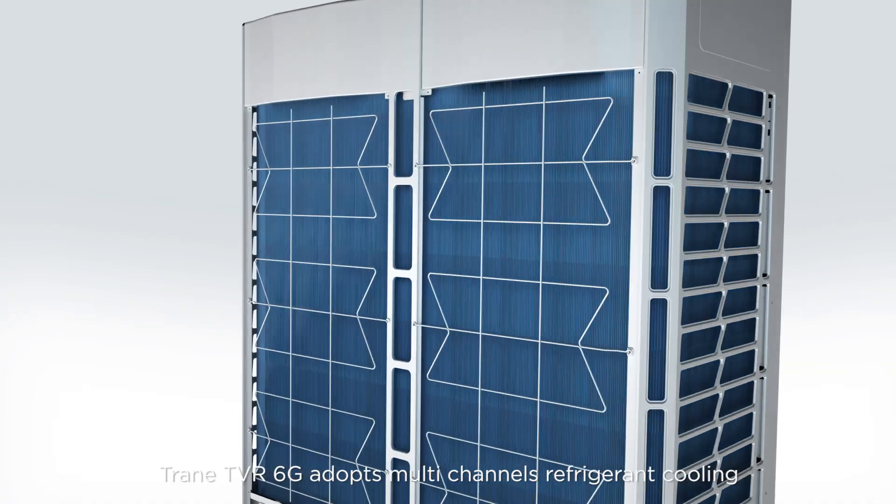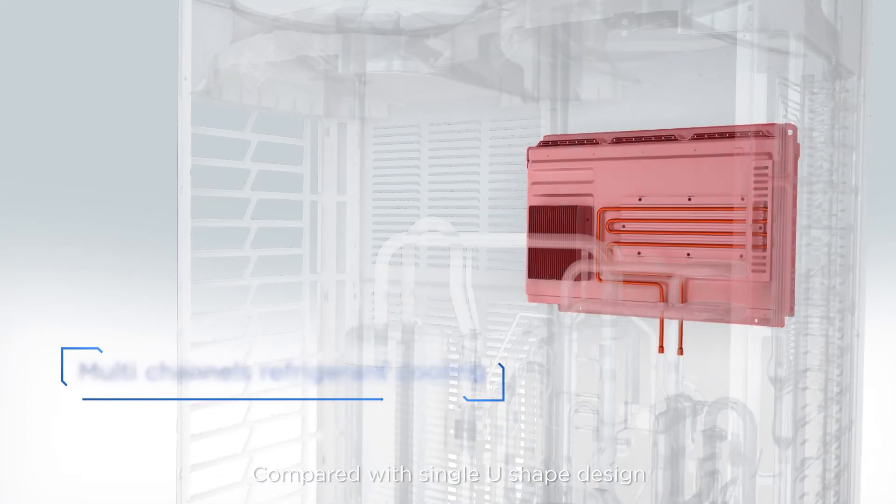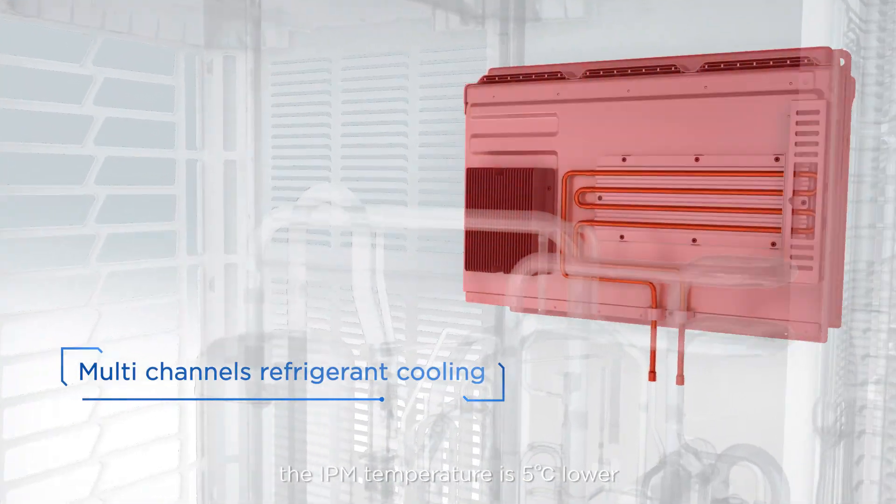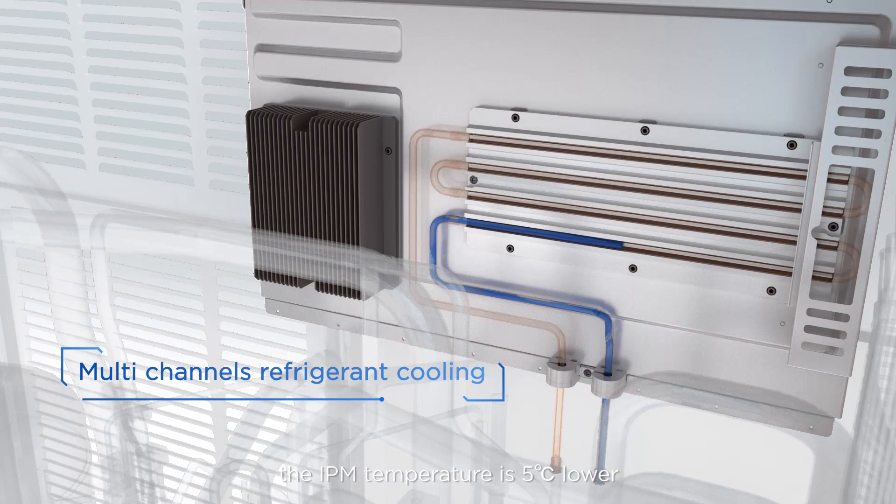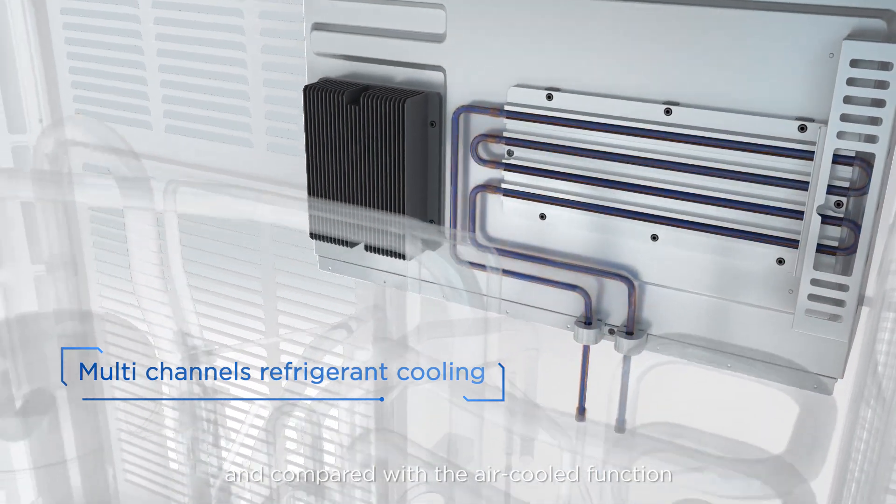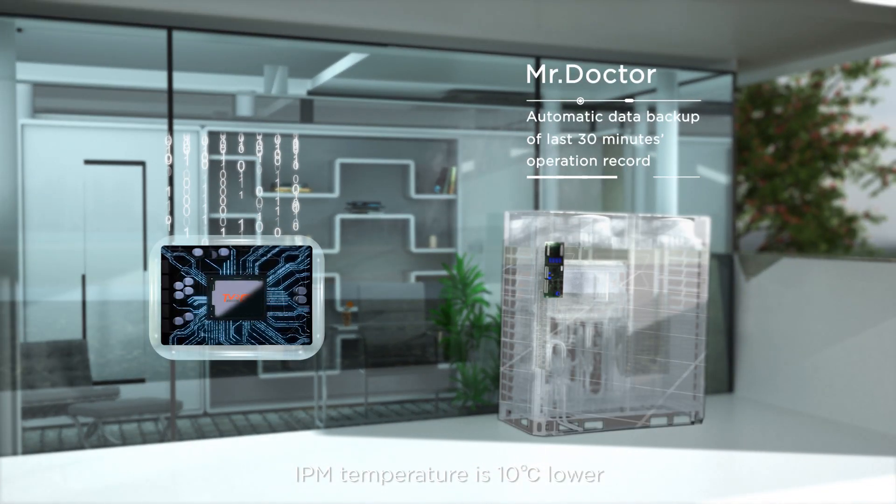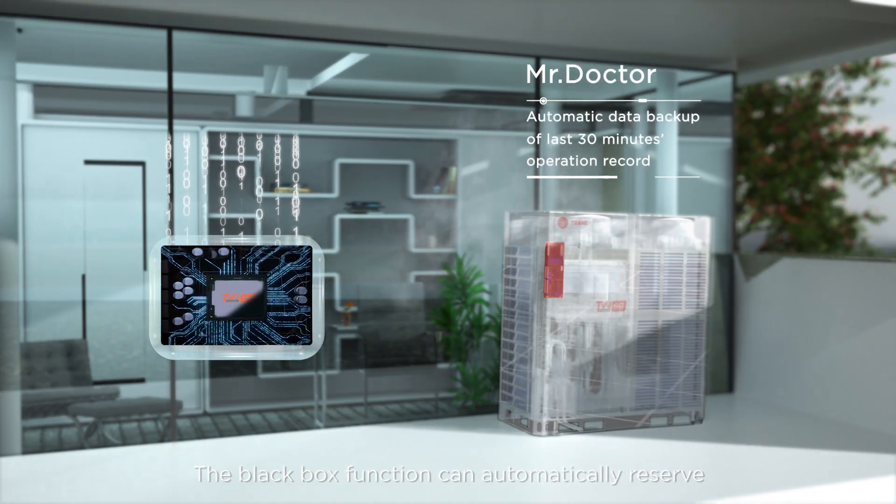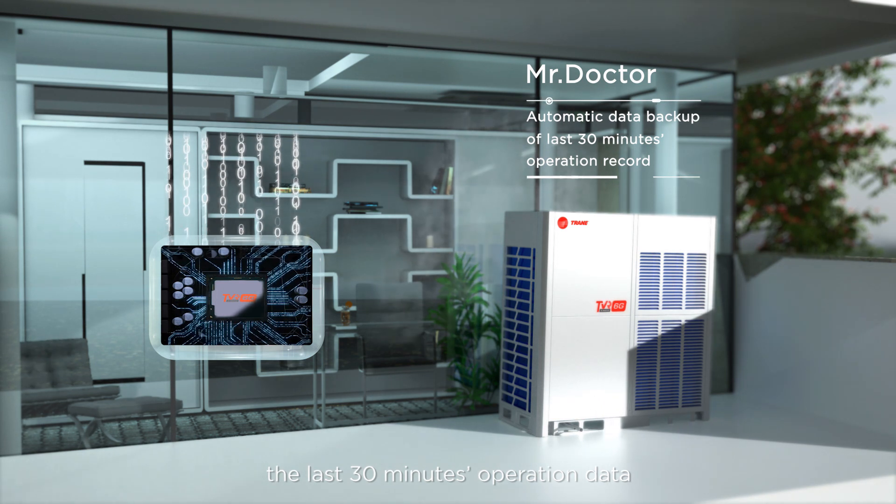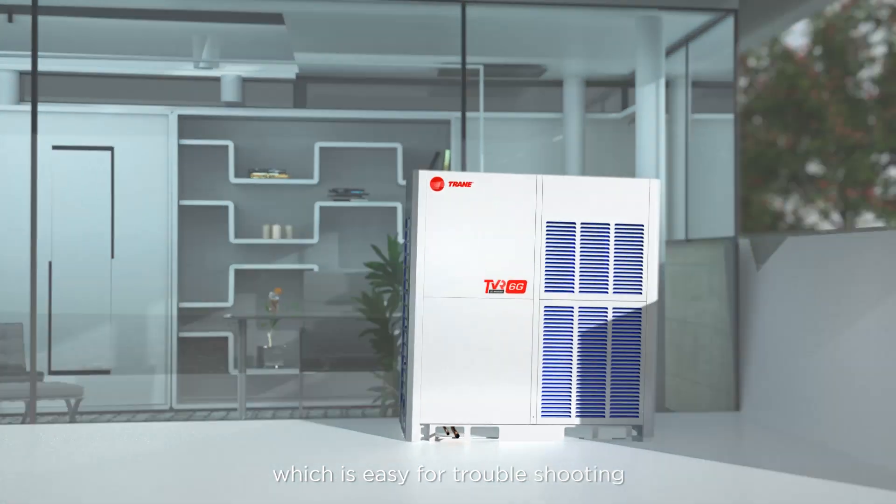TrainTVR 6G adopts multi-channels refrigerant cooling. Compared with single U-shape design, the IPM temperature is 5 degrees Celsius lower and compared with the air-cooled function, IPM temperature is 10 degrees Celsius lower. The black box function can automatically reserve the last 30 minutes operation data, which is easy for troubleshooting.